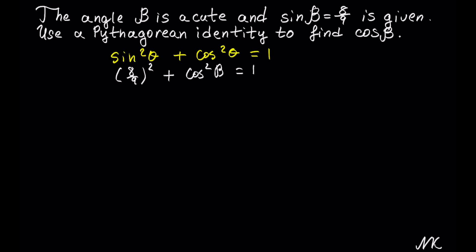Let's simplify the exponent. You can think about (8/9)² as 8/9 times 8/9, or if you know how to distribute the exponents, this is equal to 8² out of 9².